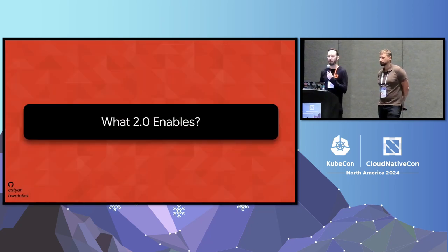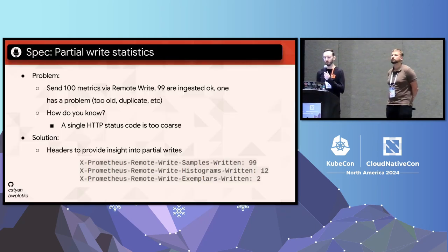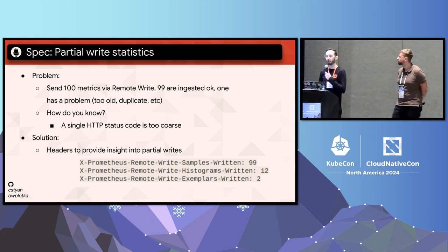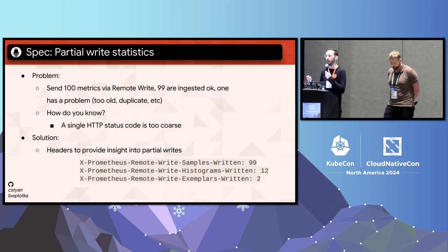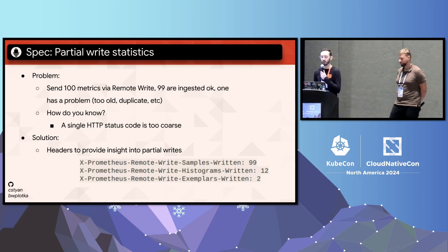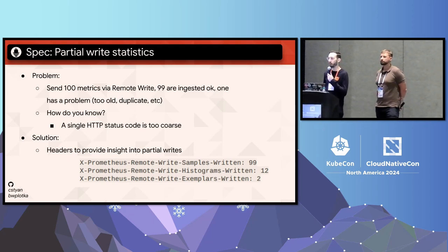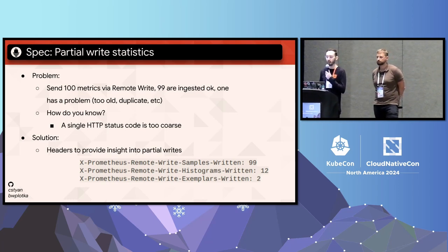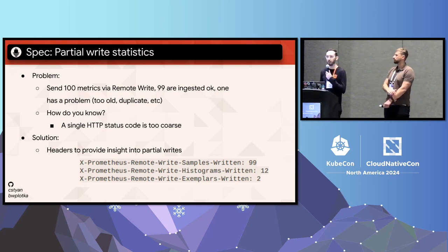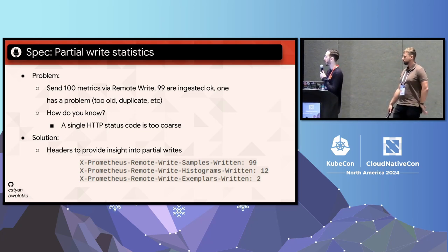So what does 2.0 actually do better than 1.0? One main thing we wanted to solve was the pain point of partial writes. In 1.0, if you send a remote write request, you get back either a 200 response saying everything was accepted, or an error — but there's no indication of whether some data was accepted or which pieces weren't. In 2.0, we wanted to make that clearer with better definitions around partial writes, success, and retry scenarios. There are new headers — almost like a checksum — so if you send 100 samples and get back a response saying 99 were accepted, you know at least one wasn't.